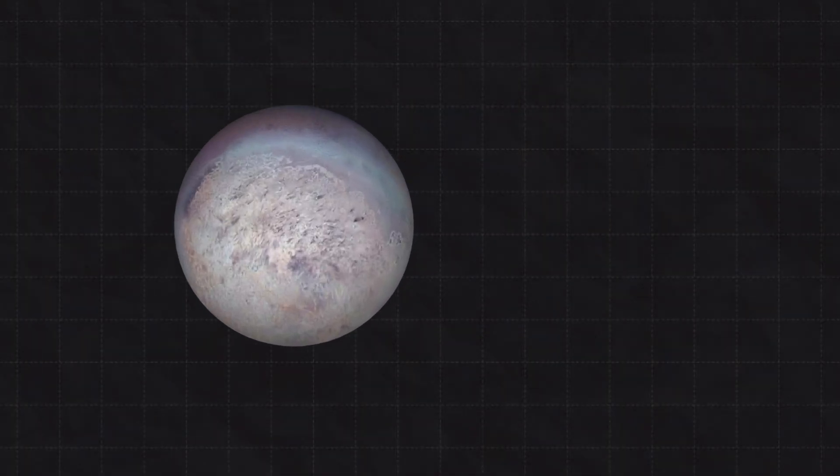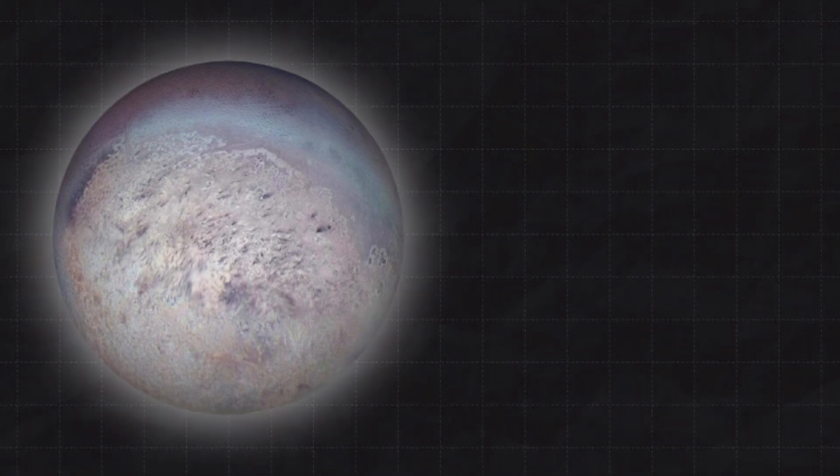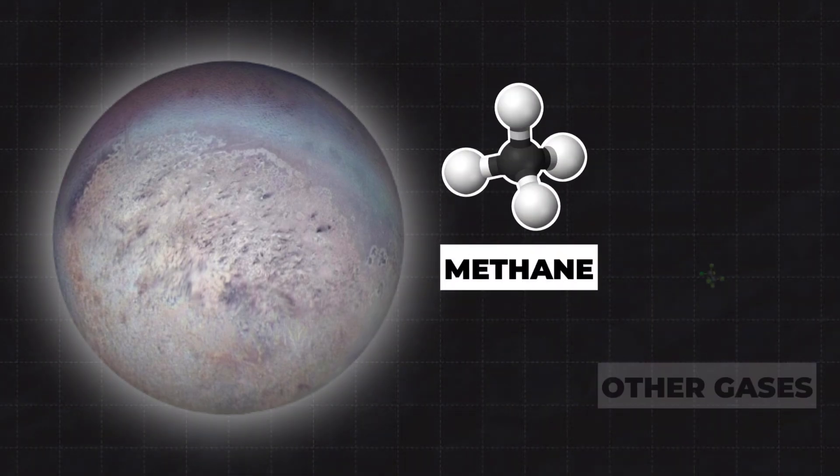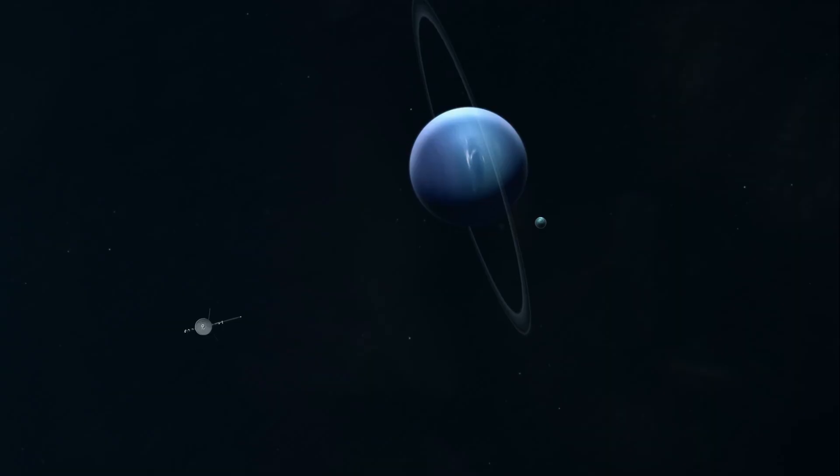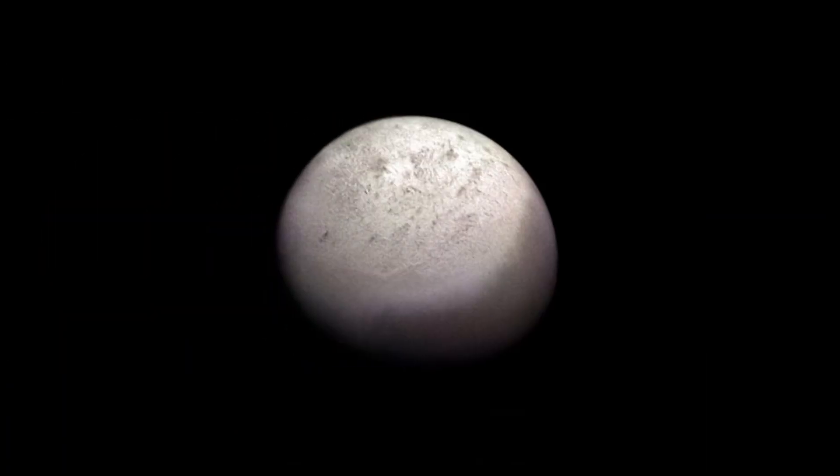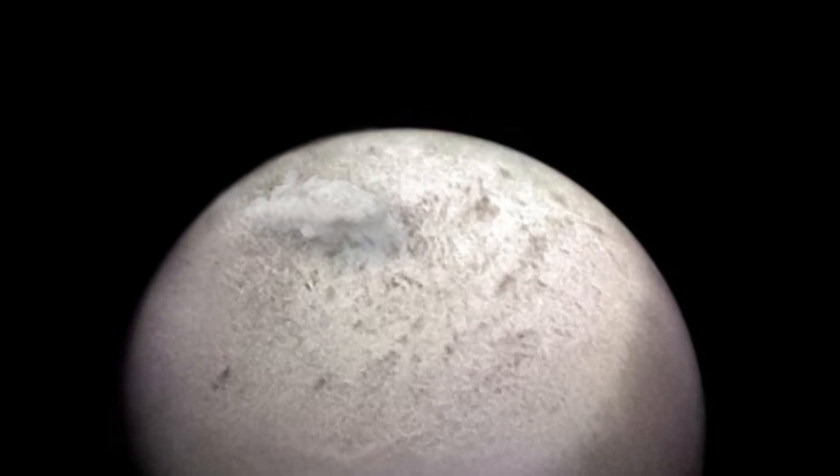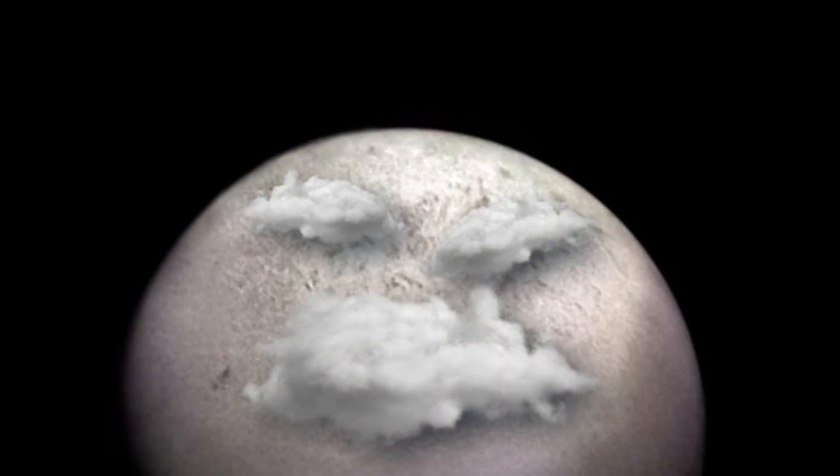Although some features on Triton's surface were not discernible then, scientists believed it may have a small atmosphere composed of methane and other gases. Voyager's closest approach to Triton on August 25, 1989, was expected to provide higher resolution views, potentially revealing the presence of clouds in Triton's atmosphere.